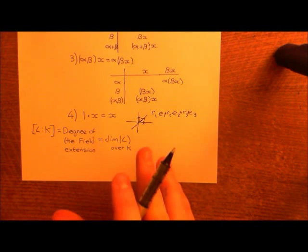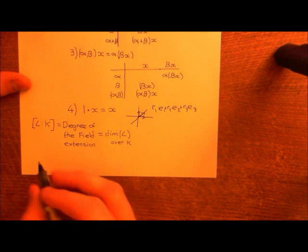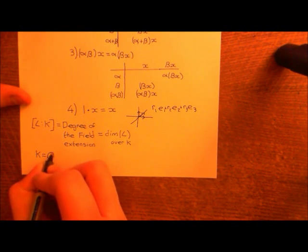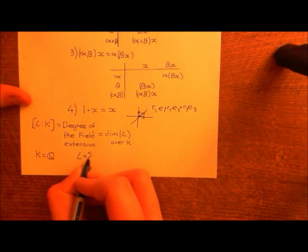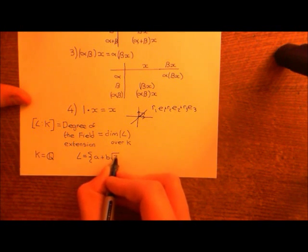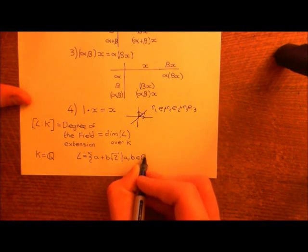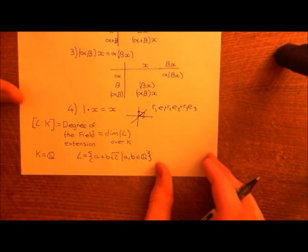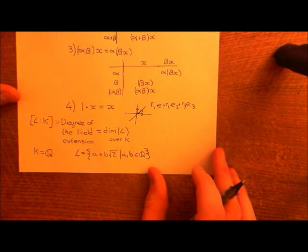Let's do a simple example. We'll start with the field of rational numbers as our small field, and create the field extension consisting of elements a + b√2 where both a and b are rational numbers. We saw in the previous videos on field extensions that this is a field, and it is a field extension of the rationals, because all the rationals are contained within it.